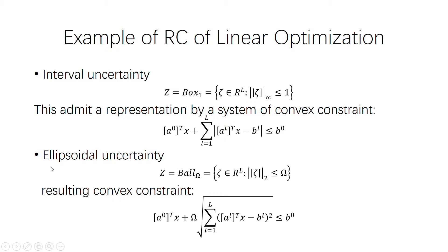We also see that an ellipsoidal uncertainty set can be represented by a ball with radius omega. If it's not a ball, we can always find some normalization process to make it one. The result of a convex optimization also has a tractable ball representation — it is still a convex function — so it will lead to a deterministic robust counterpart which is a convex optimization.